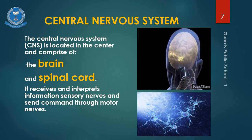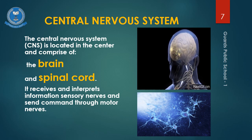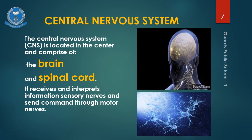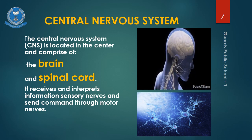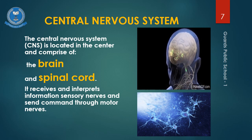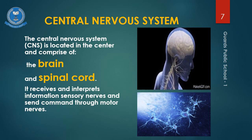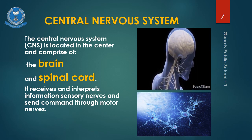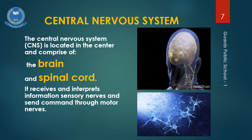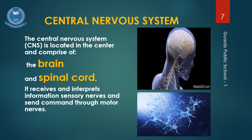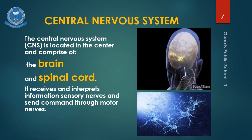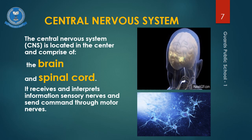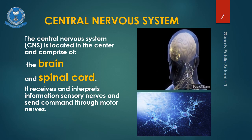The central nervous system is also responsible for the higher functions of the nervous system such as language, creativity, expression, emotions, etc. The brain is the seat of consciousness and determines who we are as individuals. The spinal cord covers the area of involuntary actions, or subconscious actions. Now we will study the brain and the spinal cord separately.